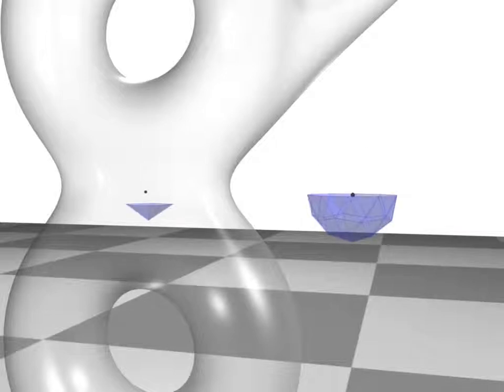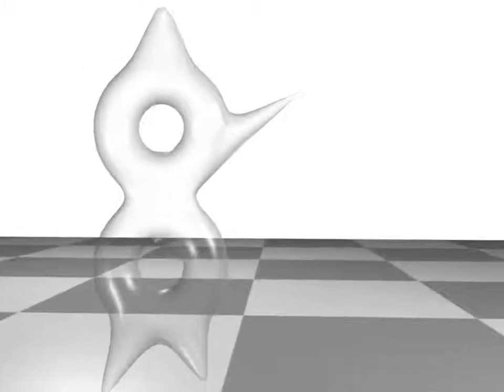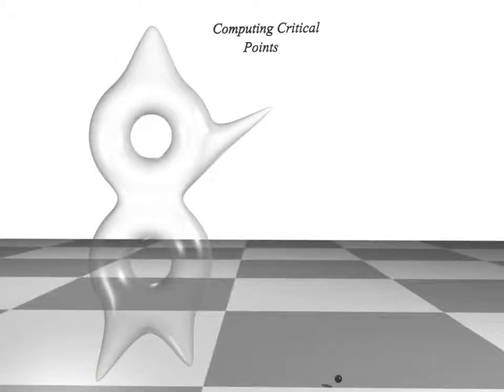For a regular point, both lower and upper links consist of one component. We use this characterization to locate all critical points. All degeneracies are handled using simulation of simplicity.